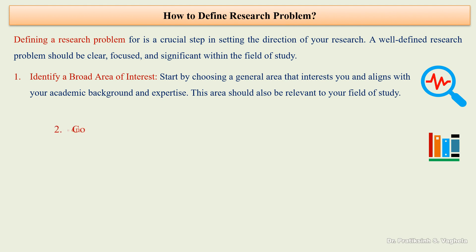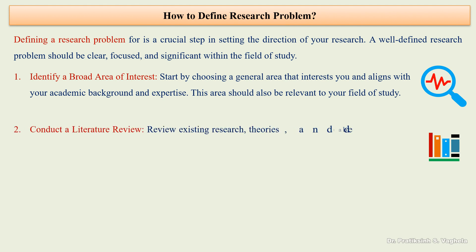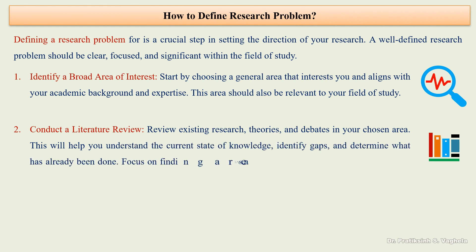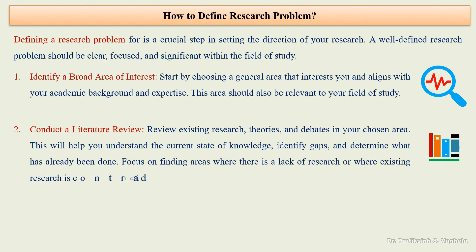The second step is to conduct a literature review. Review existing research, theories, and debates in your chosen area. This will help you understand the current state of knowledge, identify gaps, and determine what has already been done. Focus on finding areas where there is a lack of research or where existing research is contradictory or inconclusive.